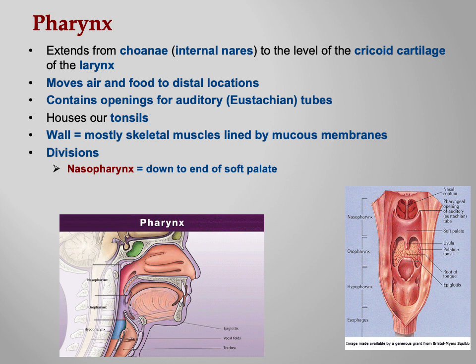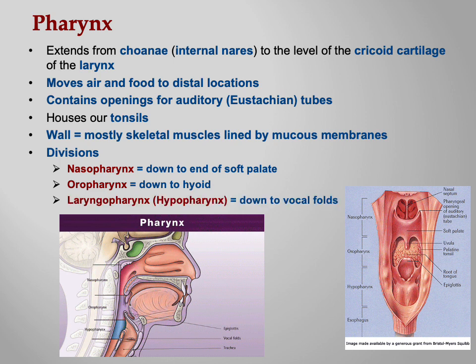The divisions again: the nasopharynx goes down to the end of the soft palate, where the uvula is — the little punching bag. From the uvula up is the nasopharynx. The oropharynx goes down to the hyoid bone, which you can see in the lower left diagram. And then the laryngopharynx, also called the hypopharynx because it's below everything else, goes down to the vocal folds. So the word 'pharynx' means throat: nose throat, mouth throat, and larynx throat.